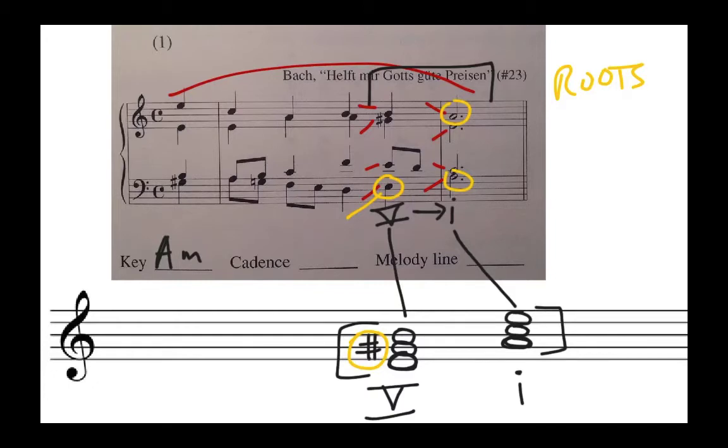Well, it turns out E is the root of the dominant chord. There's our E, the root, the bottom note of the dominant chord. A is the root of the tonic chord. And up here we have another A, and that is also the root of the tonic chord. So yes, we have a perfect authentic cadence.